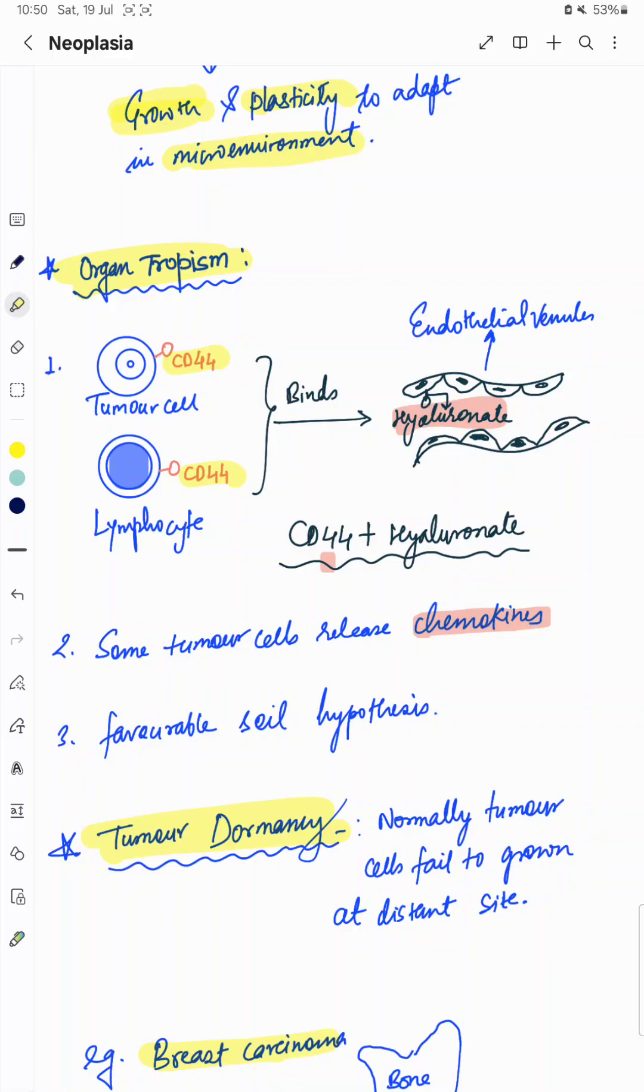In some tumor cells, they release chemokines which help them to metastasize to a particular organ. There is a favorable soil hypothesis. Tumor cells or cancer of a particular organ has specific affinity for microenvironment of different tissue. Like colon cancer tends to metastasize to liver because of similar kind of microenvironment. This is a favorable soil hypothesis.